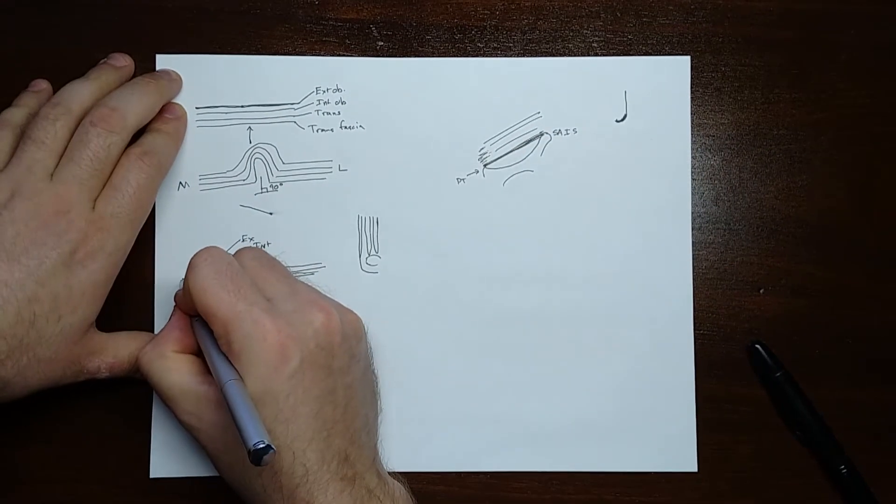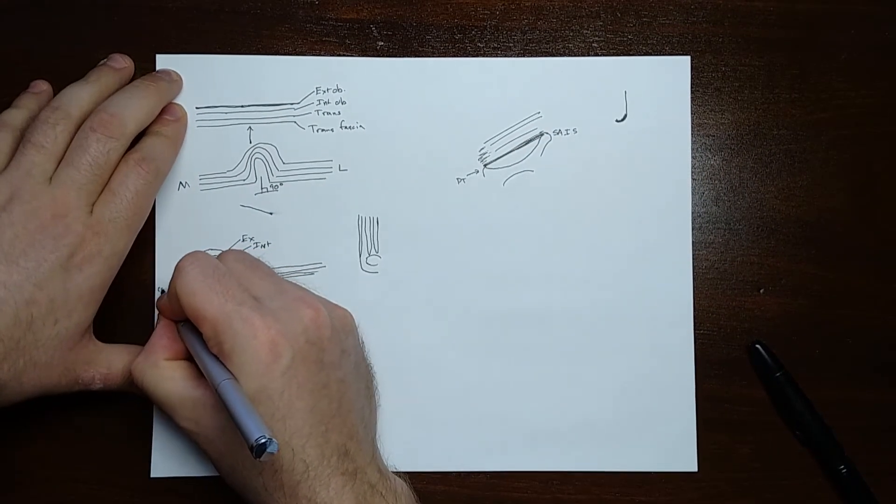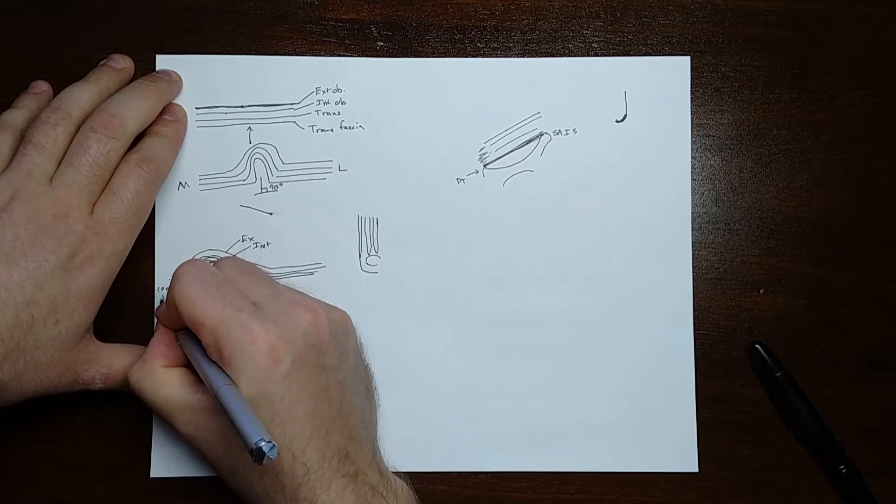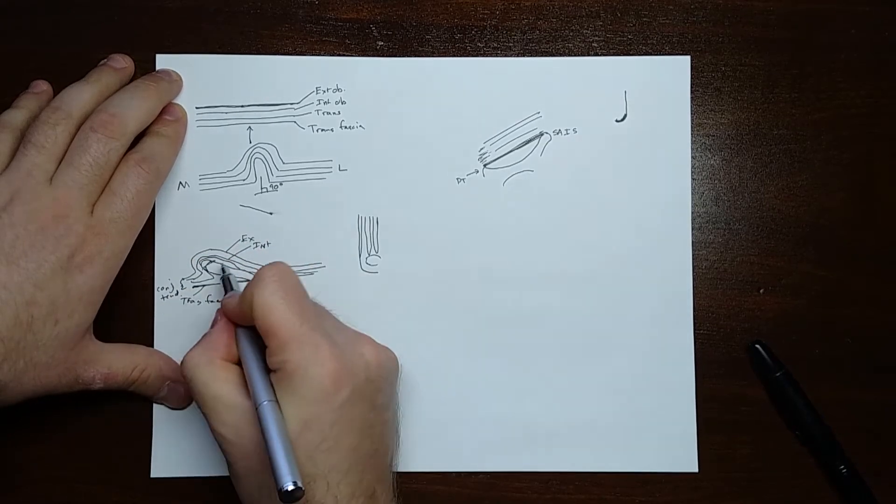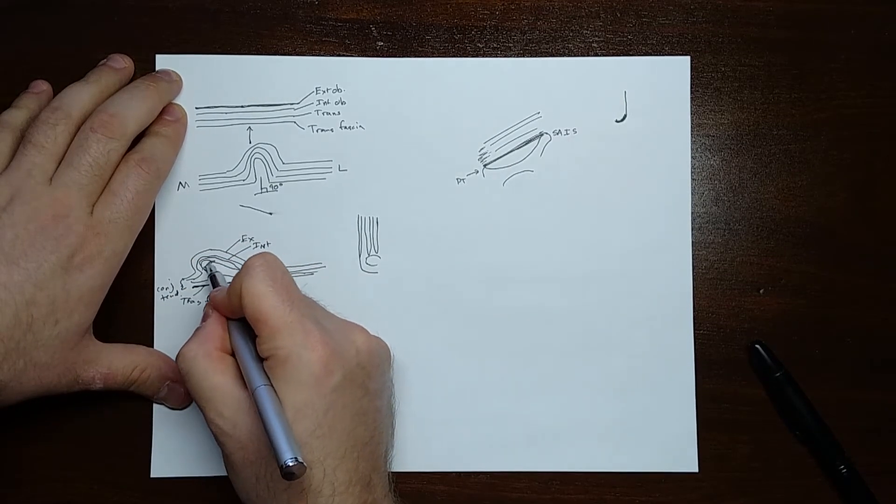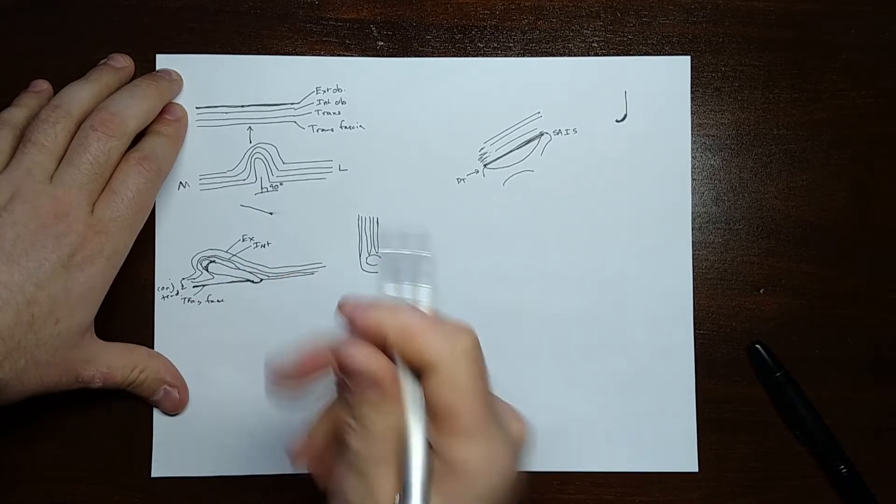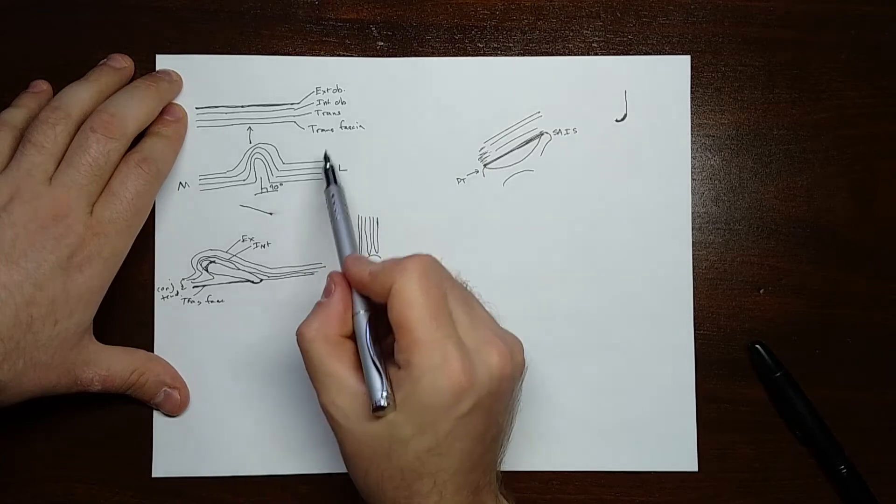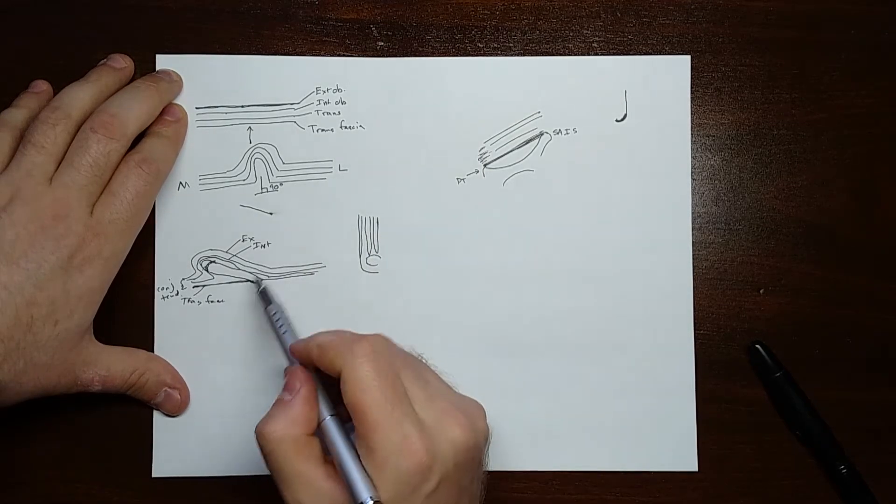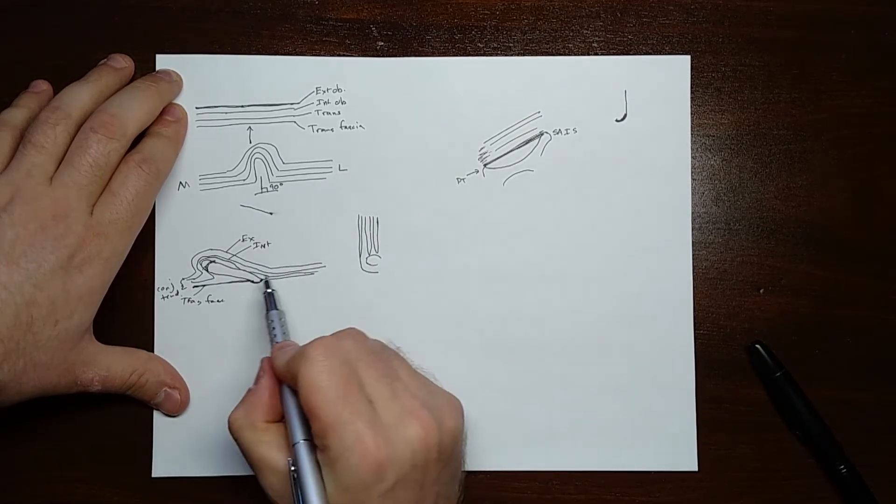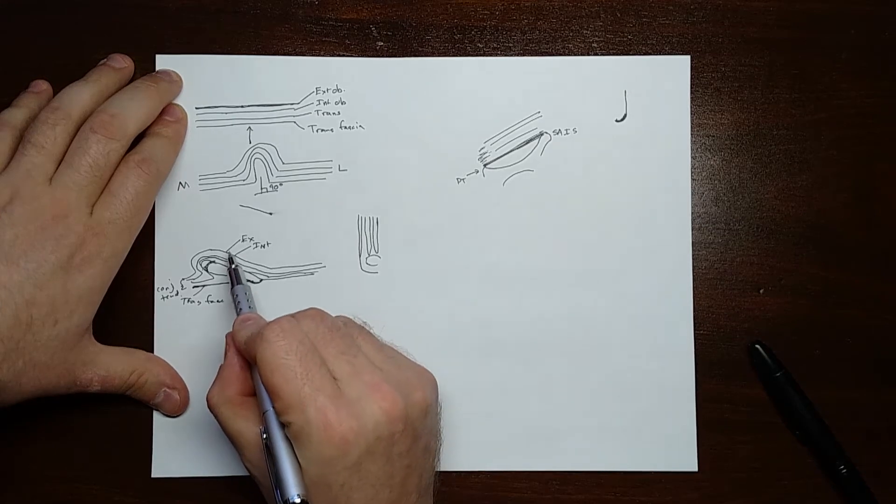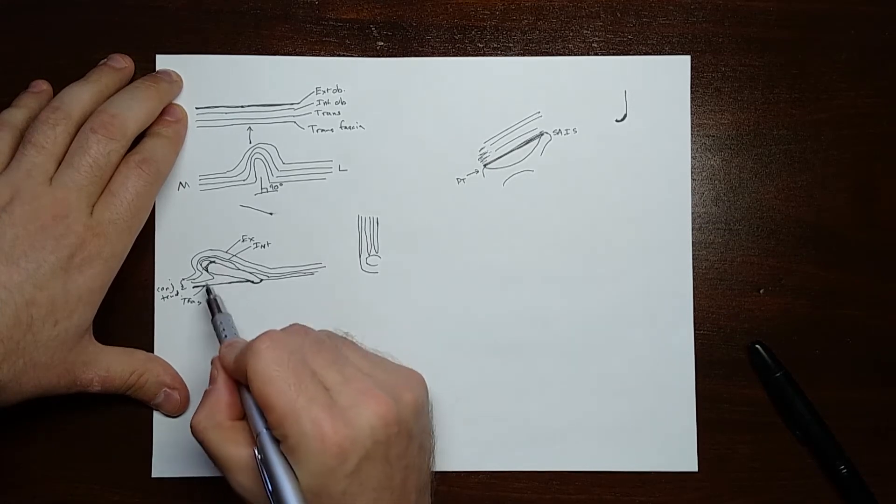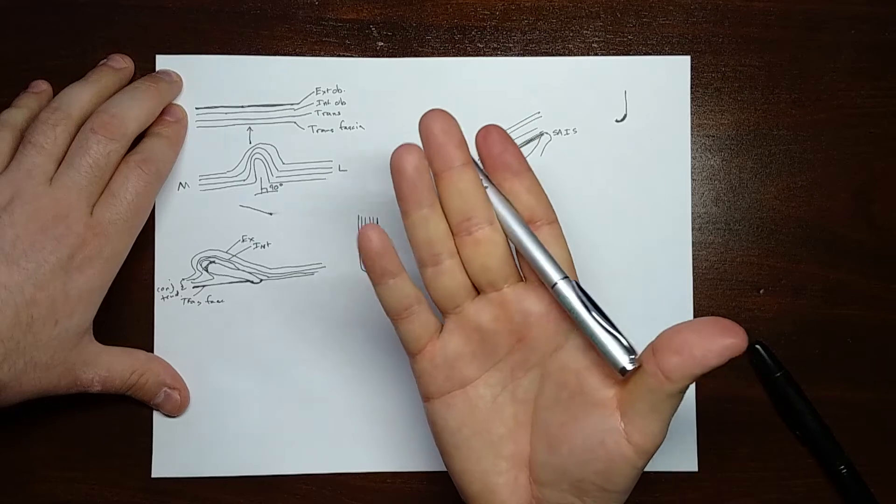These guys right here become the conjoint tendon because the superficial ring exit is placed very close to the pubic tubercle. As long as you can remember the layers of the abdominal wall, you can kind of figure out, based on that, where the anterior and the posterior walls of the inguinal canal are.